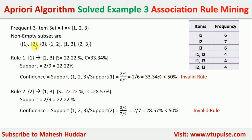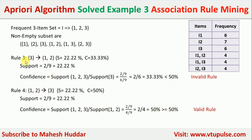Rule 2: {2} → {1, 3}. Support is 22.22%. Confidence = (2/9) / (7/9) = 2/7 = 28.57%, less than 50% — invalid rule. Rule 3: {3} → {1, 2}. Confidence = (2/9) / (6/9) = 2/6 = 33.33%, less than 50% — invalid rule.